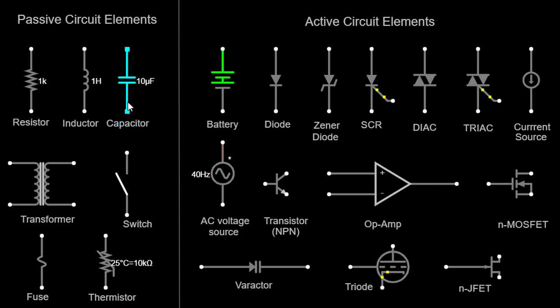Capacitor. A capacitor is a passive component that stores electrical energy in an electric field. It consists of two conductive plates separated by an insulating material called a dielectric. Capacitors are used to store and release electrical energy in circuits. They are represented by parallel lines in circuit diagrams.